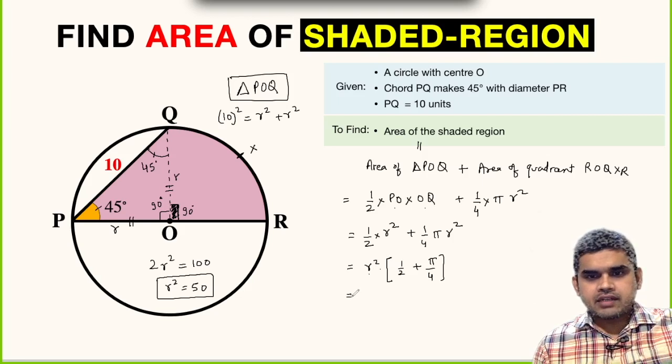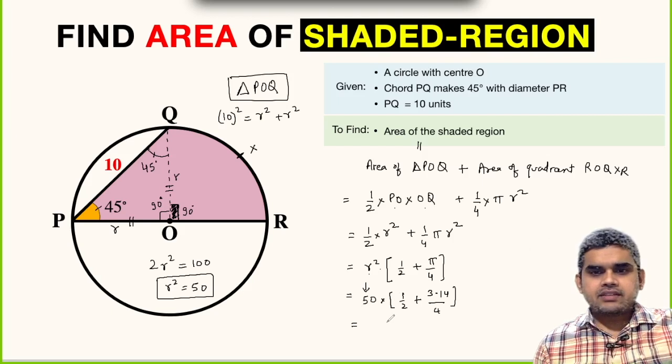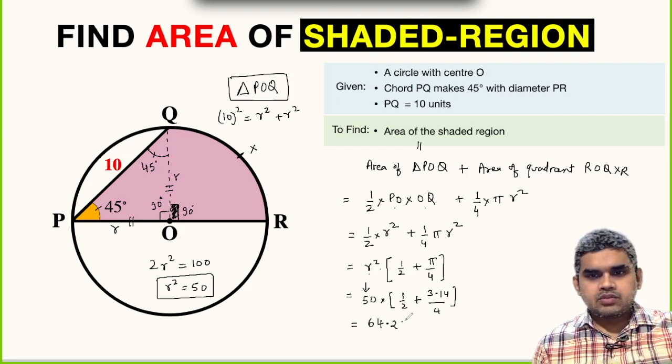I am not going to find the square root of 50 because what I need here is the value of R². In place of R², I can substitute 50 multiplied by (1/2 plus 3.14/4). After simplifying this, we will get 64.25 square units.